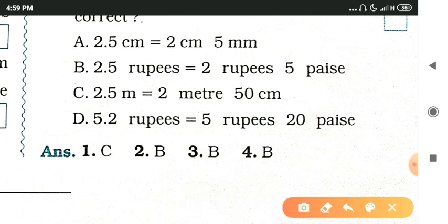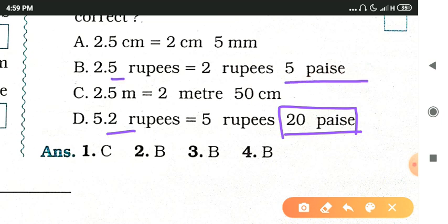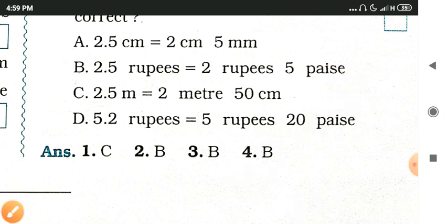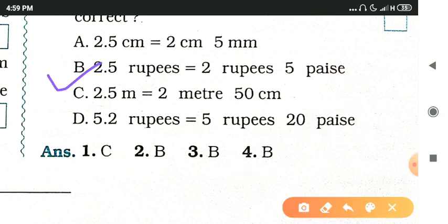For the fourth option, 5.2 rupees: here we have 2, and it should be 20, meaning where there is 5 it should be 50 — but it is not, so this expression is wrong. Therefore option B is the incorrect one and is your answer.